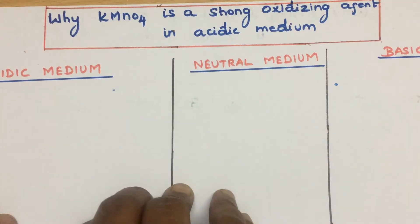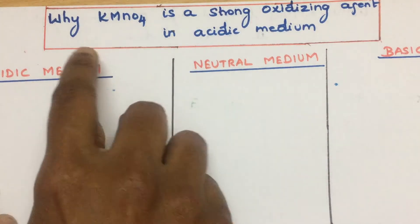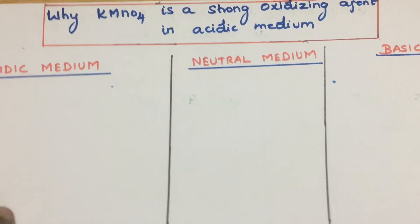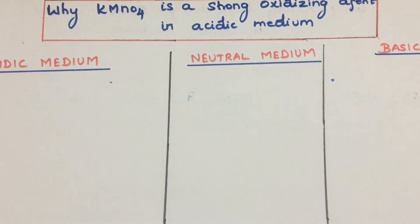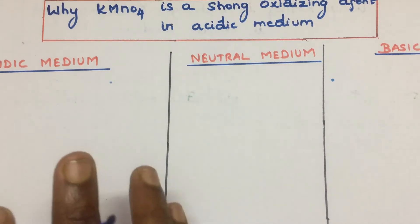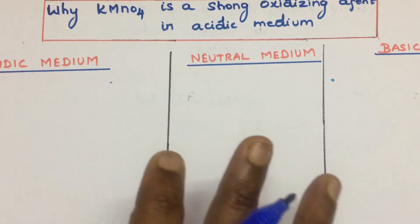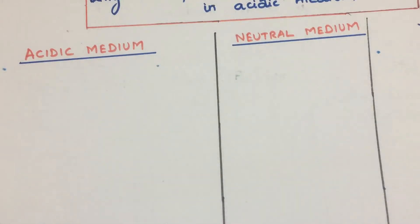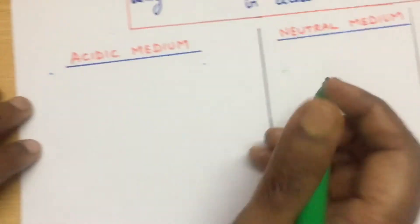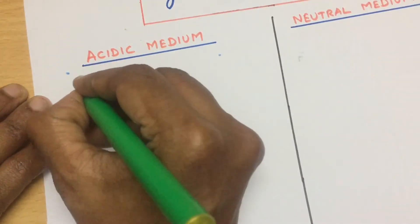Hi students, in today's session I am going to tell you why KMnO4 is a strong oxidizing agent in acidic medium. This question you would have thought about. Basically KMnO4 is a strong oxidizing agent in all media, but especially in acidic medium it is stronger, and you would have come across these equations.